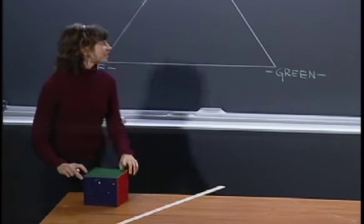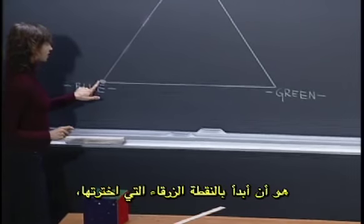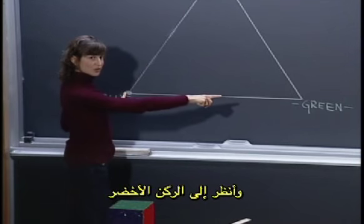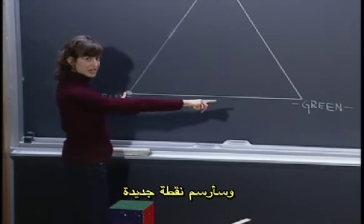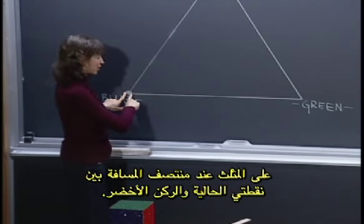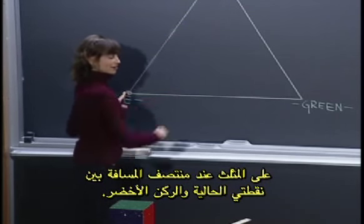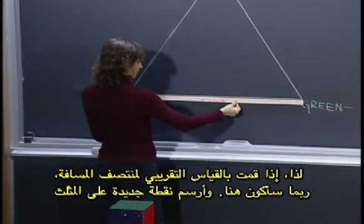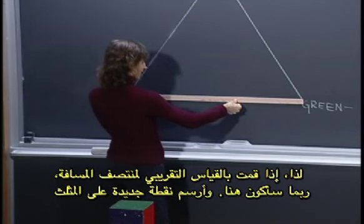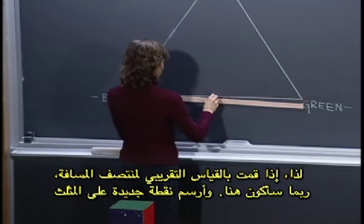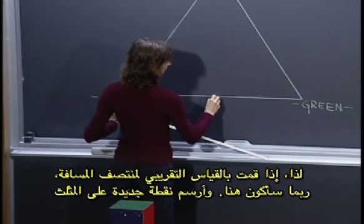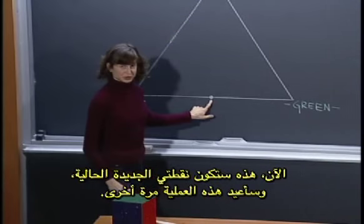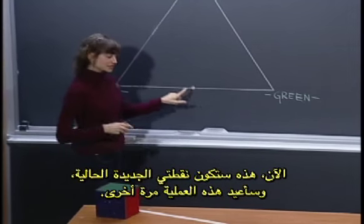So I've just rolled a green. What I'll do is start with my blue point that I've just chosen, look at the green corner, and draw a new dot on the triangle halfway between my current point and the green corner. So if I measure roughly halfway, maybe I'll be here, and I draw a new point on my triangle. Now this is my new current point, and I'm going to repeat this procedure again.